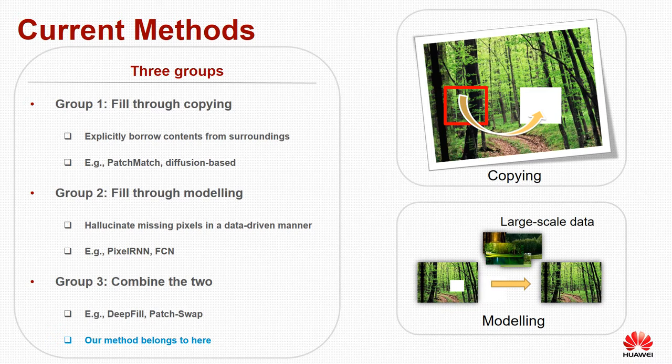Prior methods for image inpainting can be categorized into three groups. The first group fills the whole region through copying — examples include patch-match and diffusion-based methods. The second group fills the whole region through modeling in a data-driven manner — examples include PixelCNN and fully convolutional networks. The third group combines the two techniques — examples include DeepFill and patch-warp networks. Our proposed method belongs to the third group.